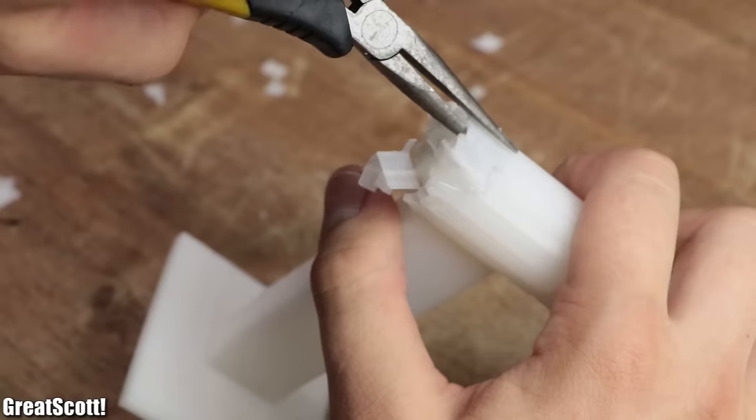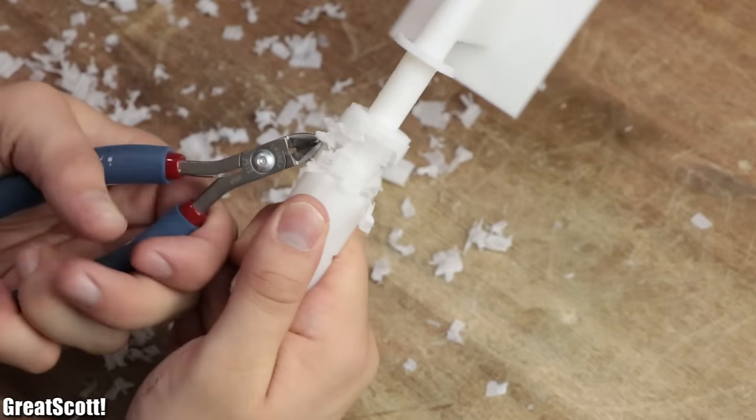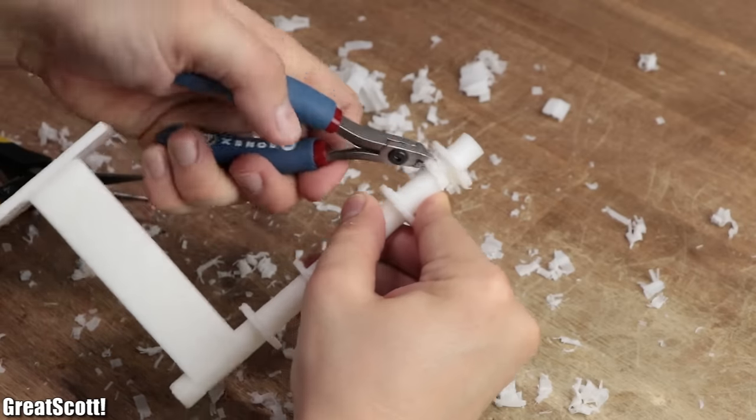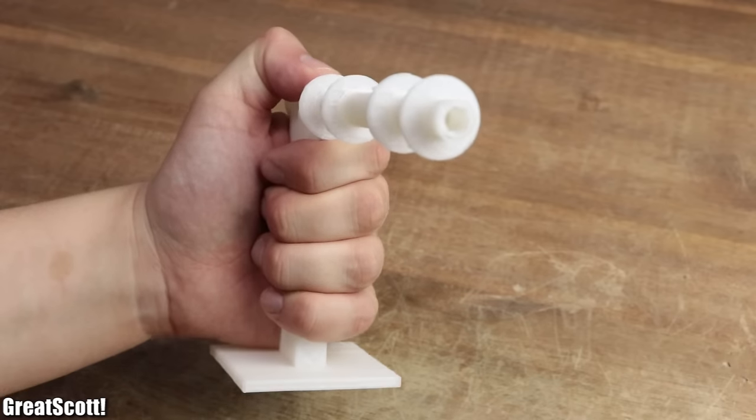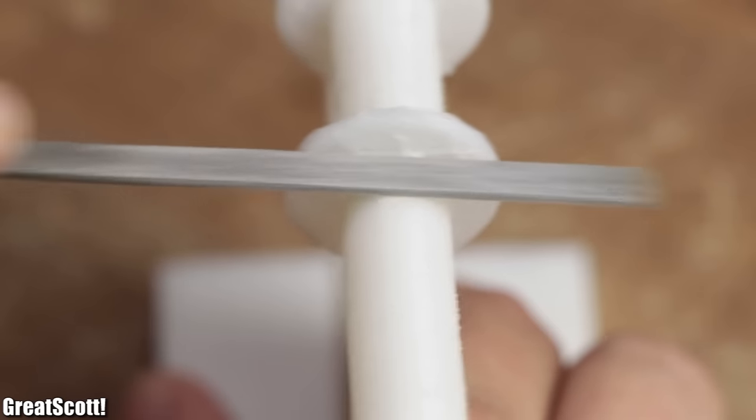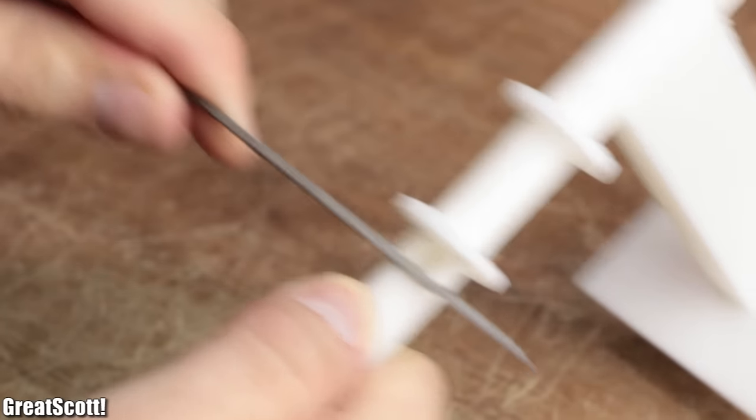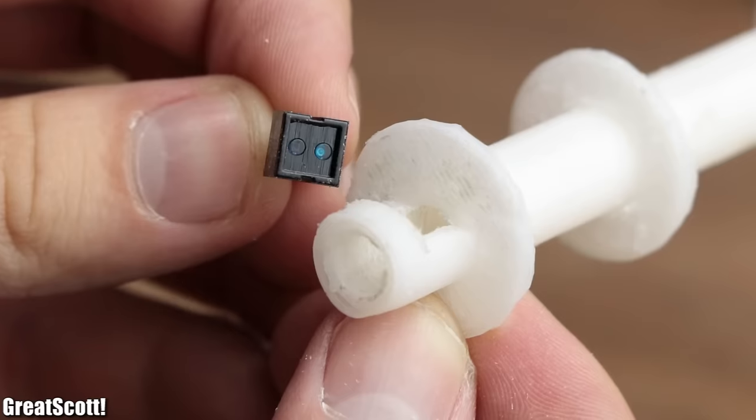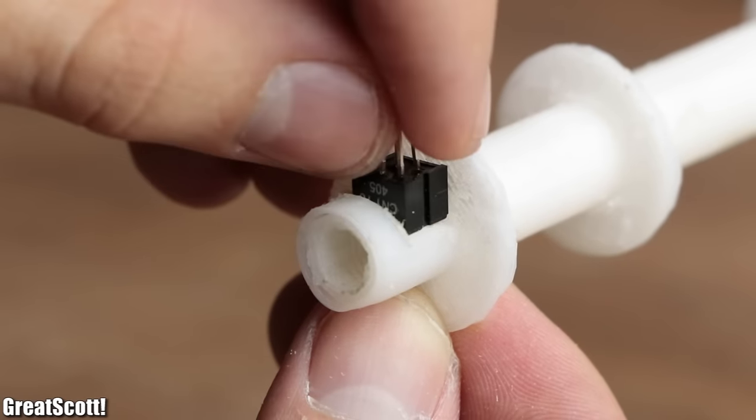Once the print was complete, I used pliers and diagonal cutters to free the gun from all the support material. And the final result actually looked pretty decent. So I continued by creating the indentations for the optical sensors through the help of a file, and then brought in the most important component.